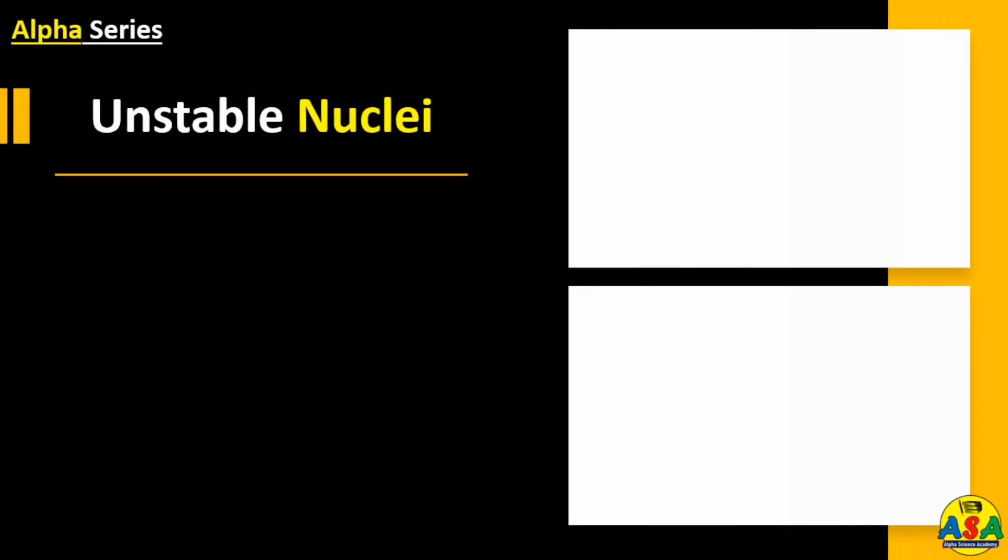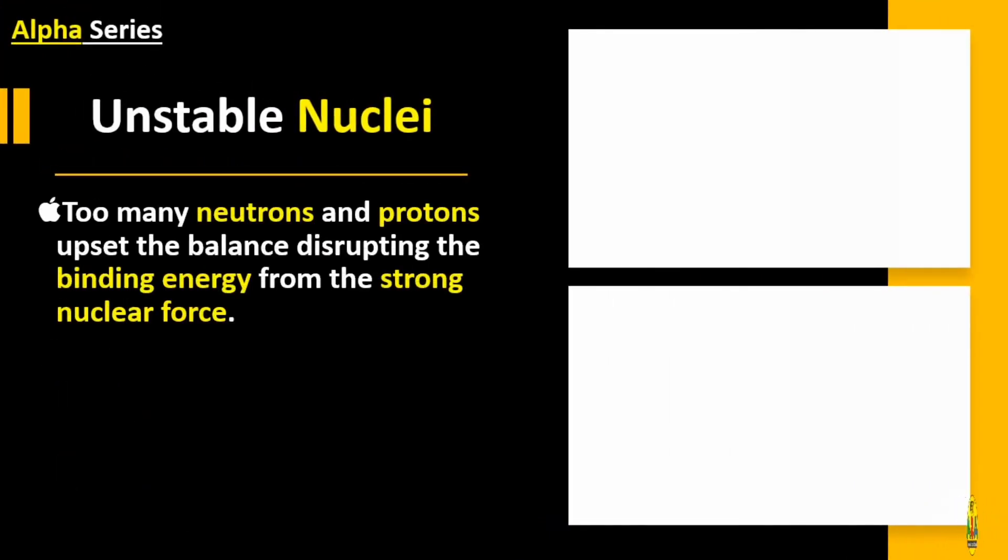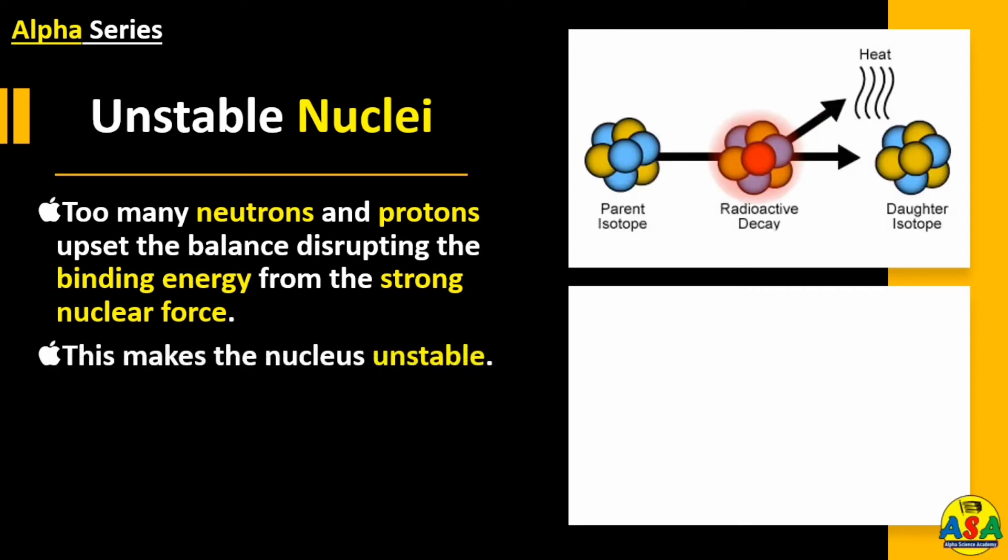Unstable nuclei: too many neutrons and protons upset the balance inside the nucleus, disrupting the binding energy from the strong nuclear force. In this way, the nucleus becomes unstable.